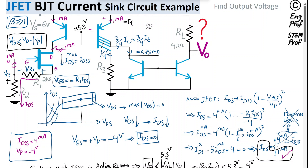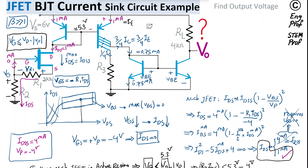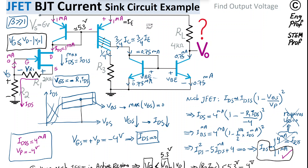The 0.75 milliamp is the emitter current of the NPN BJT in the diode configuration. The two NPN transistors are matched — same package, same junction properties. Since they share the same VBE voltage, the mirror NPN transistor is forced to carry the same emitter current of 0.75 milliamp. With large beta, the collector current also equals approximately 0.75 milliamp, and this current then flows through the load resistor RL.